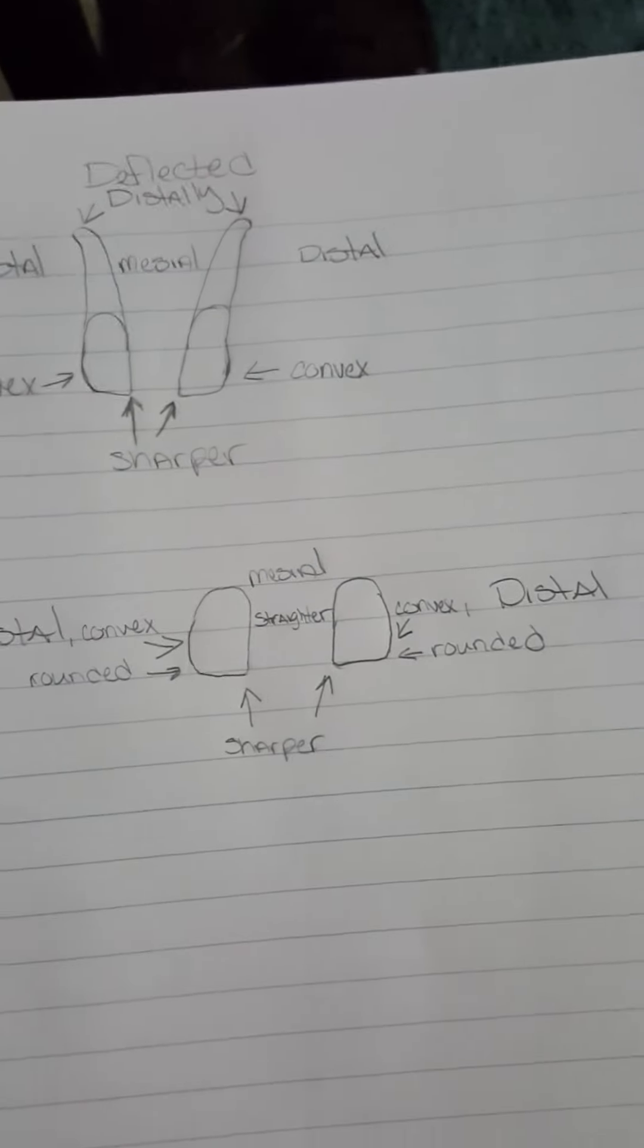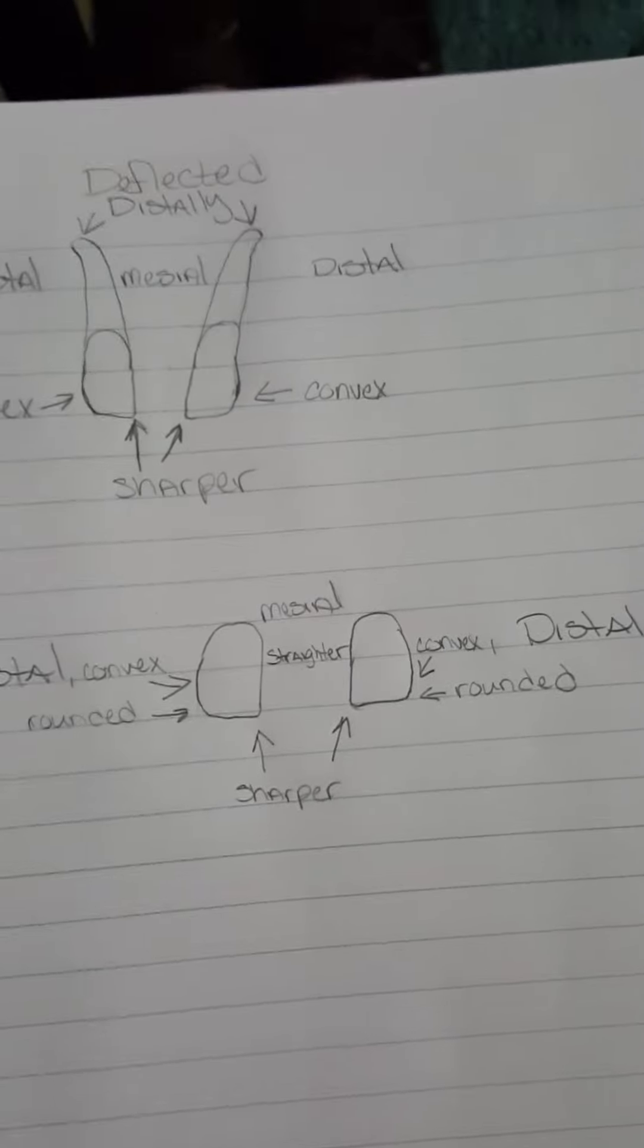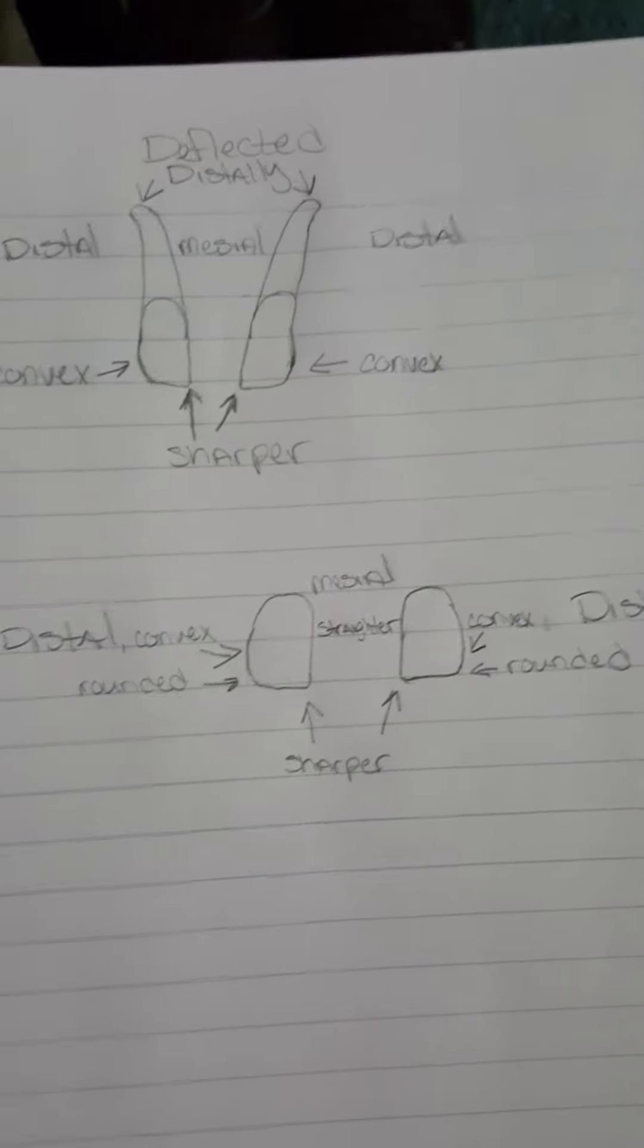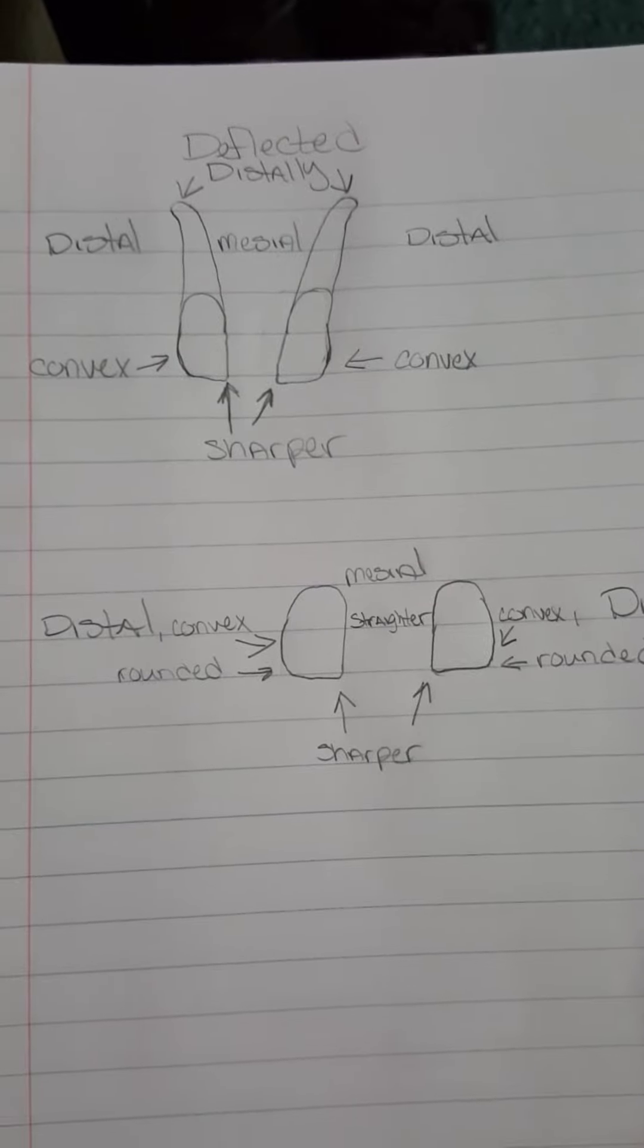So if you had the teeth side by side, you'd be able to tell by the rounded side and the straighter side where they would be placed. So these are how to tell the differences. Thanks!